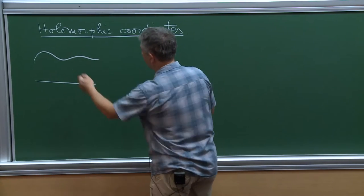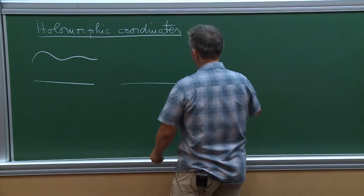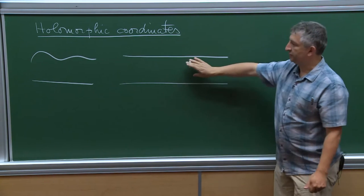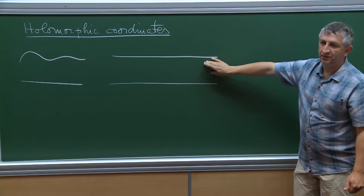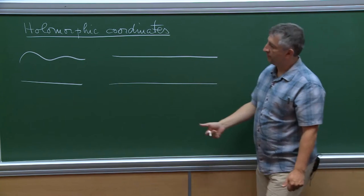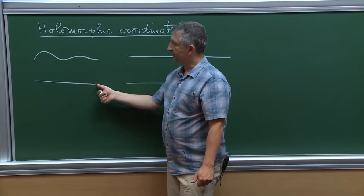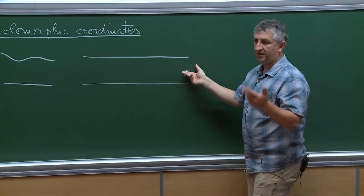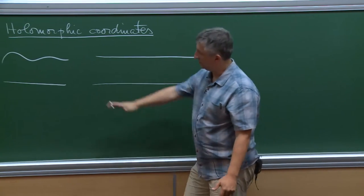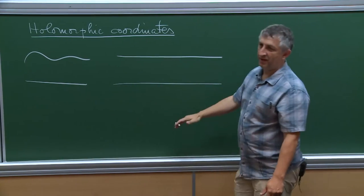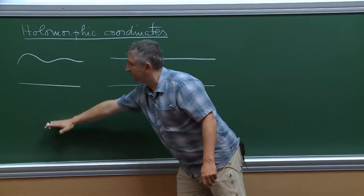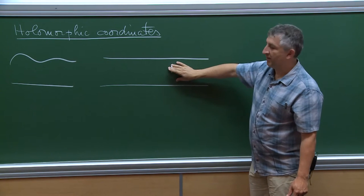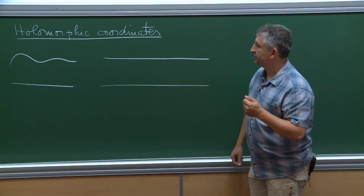Instead of working with the fluid domain, you pick a flat domain — either a strip for finite bottom, or a half-plane when the bottom is infinite. By the Riemann mapping theorem you can find a conformal transformation between these two domains. I'll use zeta equals alpha plus i beta for the flat domain, and z with coordinates x plus iy for the fluid domain — so z is a function of zeta.